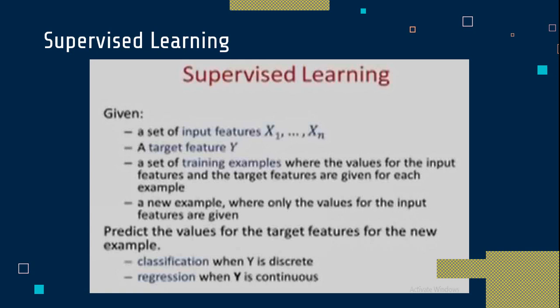In supervised machine learning using classification algorithms, the output is a discrete value — simply yes or no, tall or short, a binary value. If the output is binary, it is called discrete. But if you are considering a regression problem in supervised learning, that is called a continuous value. For example, if you want to predict the price of a house in a location, that value is not binary.